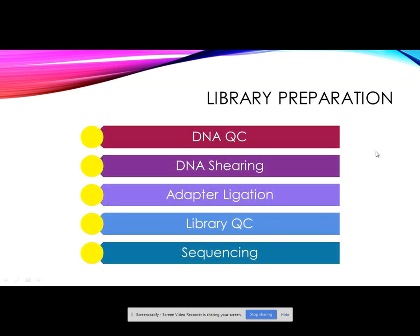These are the generic steps involved in library preparation which you can introduce during your tutorial. These include DNA quality control steps undertaken at the wet lab, DNA shearing which involves fragmentation into requisite sizes, adapter ligation based on your specific platform — in Illumina platforms an index is attached to the 5' and 3' ends of the DNA sequence to facilitate assembly and annotation — followed by library quality controls prior to loading DNA into the sequencer, and finally sequencing. All students of bioinformatics should be cognizant of these steps.